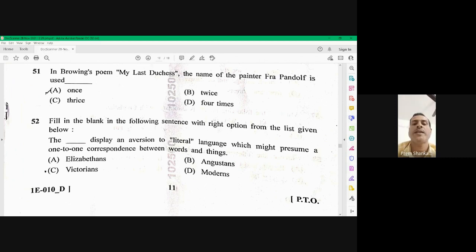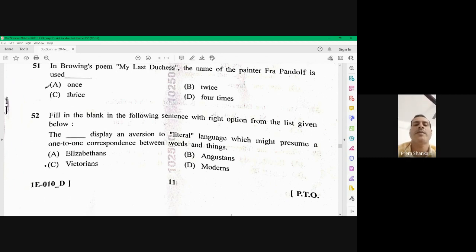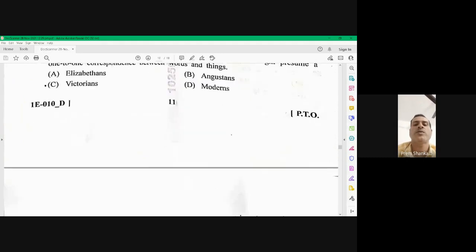Question number 52, fill in the blank with the right option. The display and a version of literal language, which might presume one-to-one correspondence between words and things. As far as I know, the right options should be Victorians, but I have a doubt in this option. If you find the right option, can you let me know in the comment box.